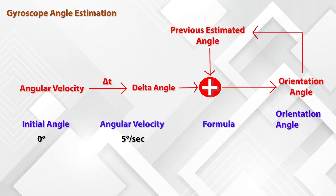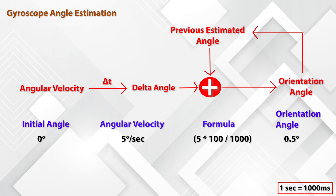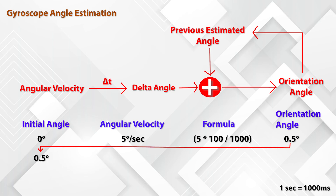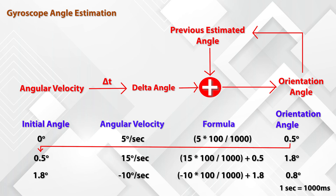Say the initial estimate is zero and we are measuring every 100 millisecond interval. At the first interval we receive angular velocity of 5 degrees per second, meaning the device rolled 0.5 degree — the calculation is 5 multiplied by 100 divided by 1000, since 1 second equals 1000 milliseconds. At the next reading we receive 15 degrees per second, giving an evaluated roll angle of 1.8 degrees. At the third reading with minus 10 degrees per second, the value will be 0.8 degrees.